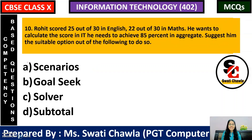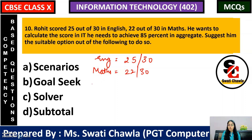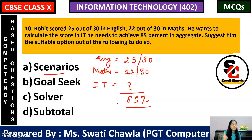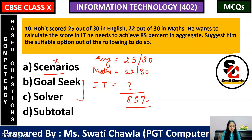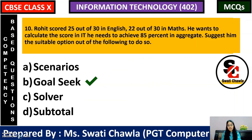Question 10: Rohit scored 25 out of 30 in English and 22 out of 30 in Maths, and he wants to calculate the score of IT he needs to achieve 85% in aggregate. Suggest him the suitable option. Scenario is ruled out since we need to calculate an answer. Both goal seek and solver are based on backtracking — where the answer is given and you find the input. Here there is only one unknown variable — IT marks. So the correct answer is goal seek.